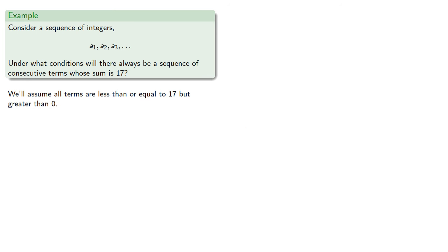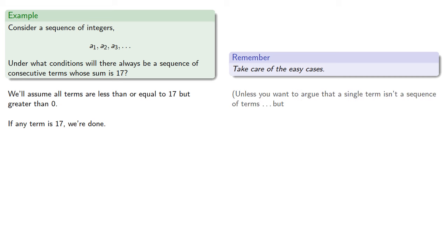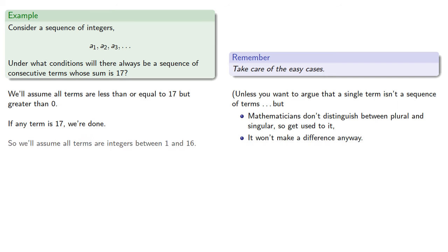And it's probably worth taking care of the easy cases first. If any term is 17, we're done. Unless you want to argue that a single term isn't a sequence of terms. But mathematicians don't distinguish between plural and singular, so get used to it. And it won't make a difference anyway. In any case, we'll assume that all of our terms are integers between 1 and 16.